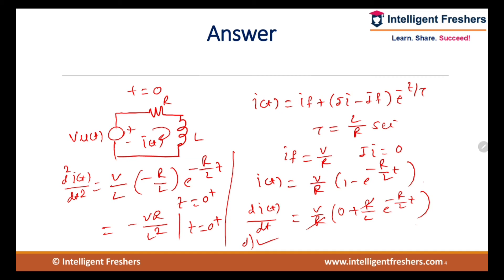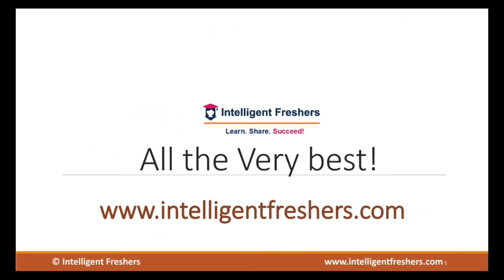You need to understand the property of the inductor: the inductor opposes sudden change in current. The property of a capacitor is that it opposes sudden change in voltage. Whenever the switch is closed at t = 0, to find di/dt or d²i/dt² at t = 0+, use the equation based on these properties. Transient analysis is a very important topic for GATE, engineering services, or any competitive examination. Focus on transient analysis and use the basic concepts of inductor and capacitor. Thank you very much, all the very best.